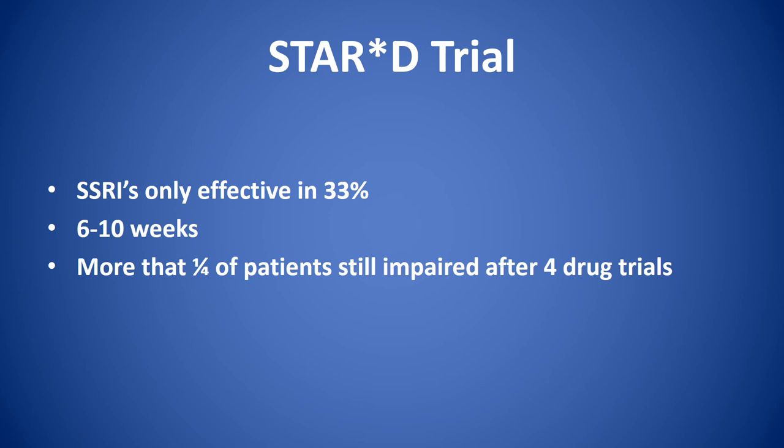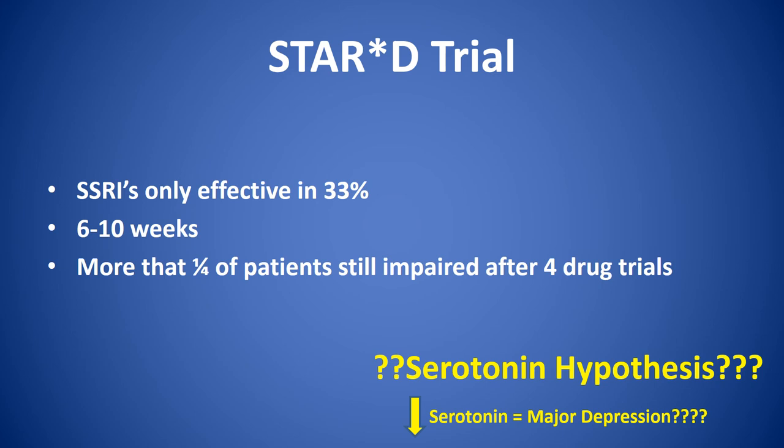the Sequent Treatment Alternatives to Relieve Depression, or STAR-D trial, sponsored by the National Institute of Mental Health, showed that SSRIs were only effective in 33% of individuals, and that could take 6 to 10 weeks. Furthermore, after 4 drug trials, more than a quarter of patients still showed profound impairments. This suggested that the serotonin hypothesis was, at best, incomplete.